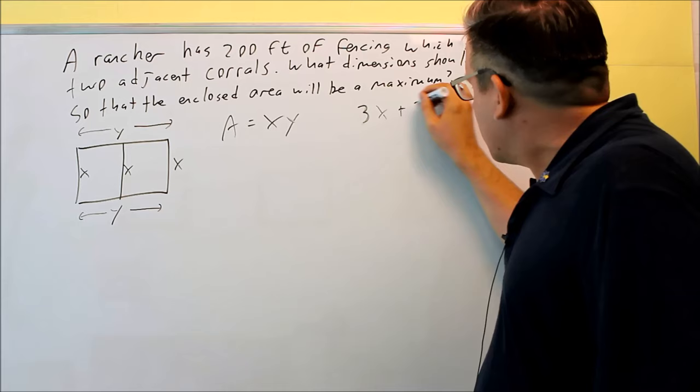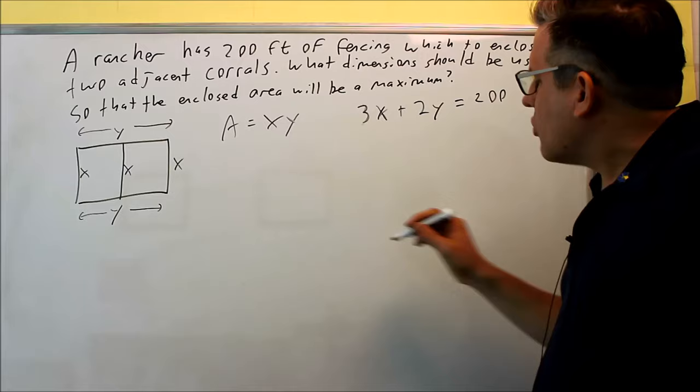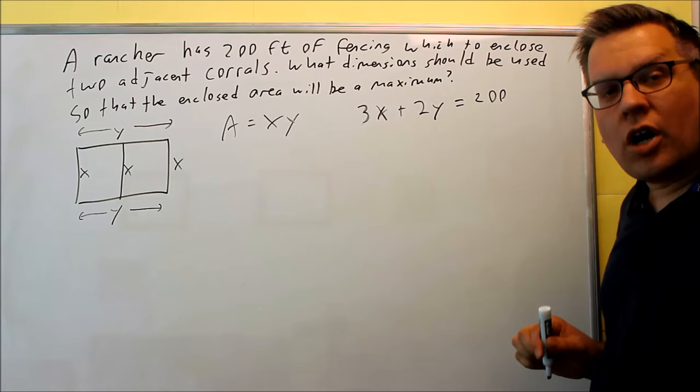Let's write the equation for this. We have three x's plus two y's. That's going to give you 200 feet. That's using up all, we have five different pieces to this and they're all going to add up to 200.